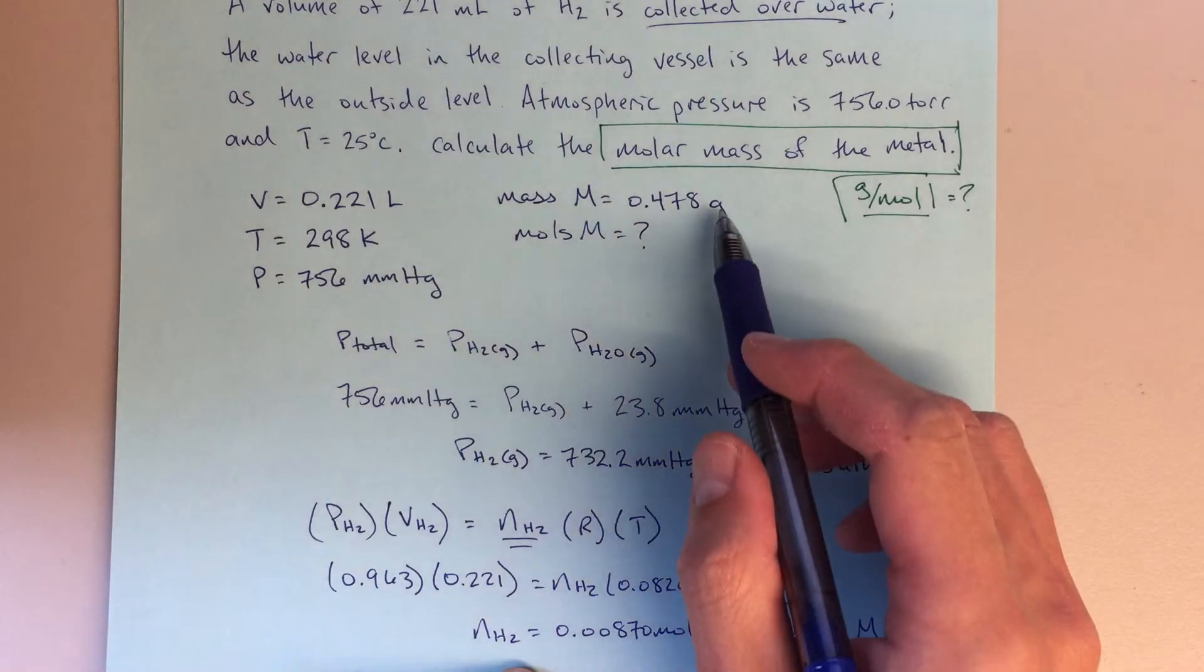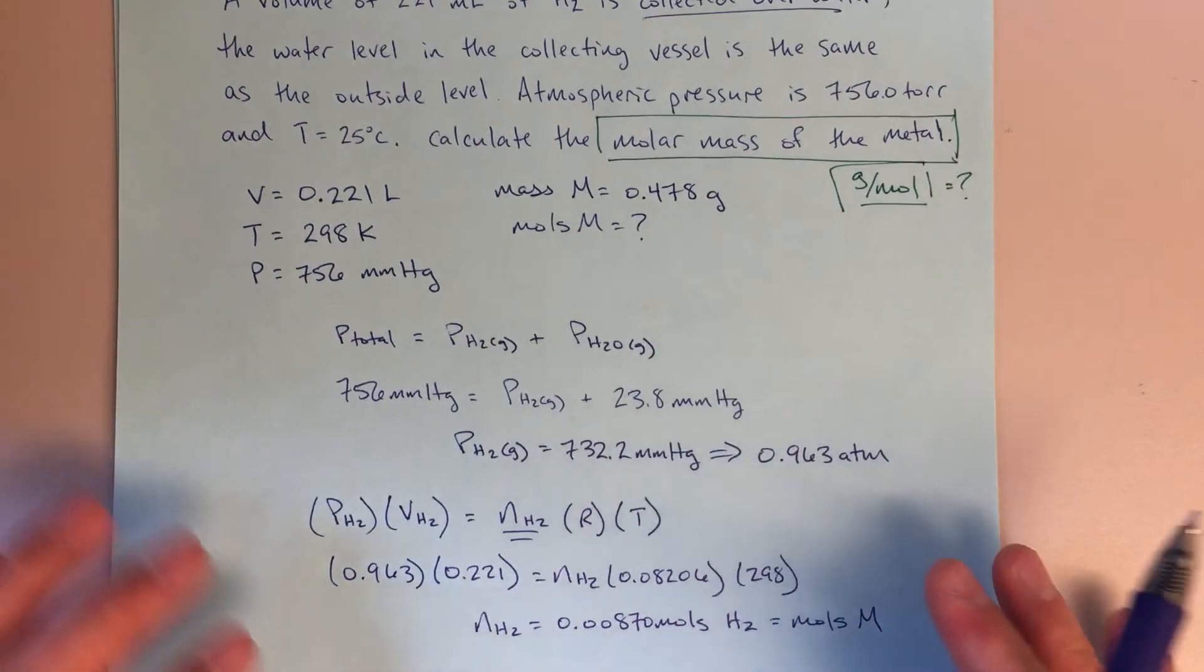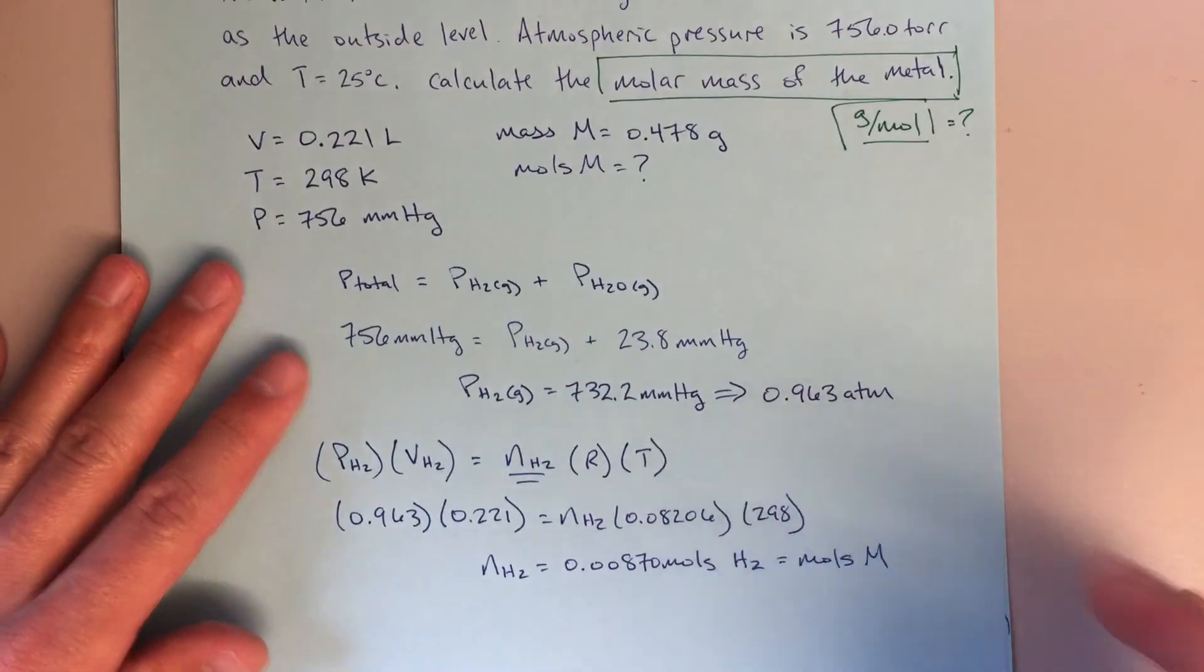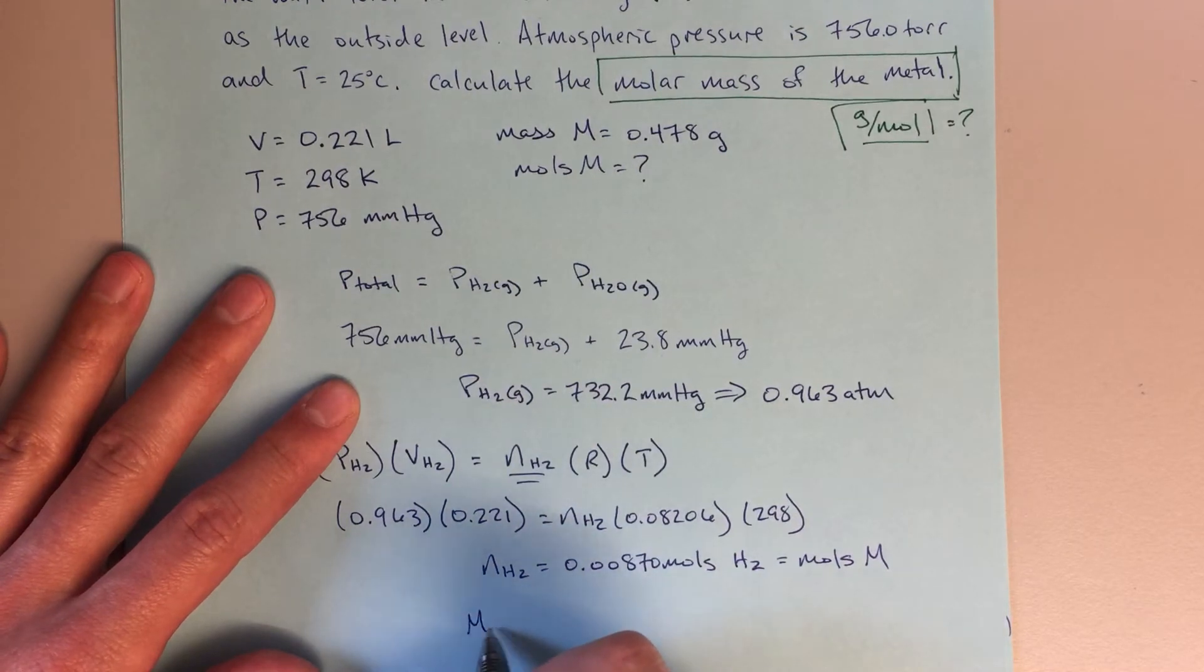And if I know my moles of M, and I know my grams of M, I can solve for the molecular mass. So the molecular mass is just going to be mass over moles,